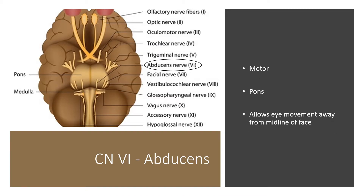Cranial nerve 6 is the abducens nerve. It has a motor function, is located at the pons, and allows your eye to move away from the midline of the face.